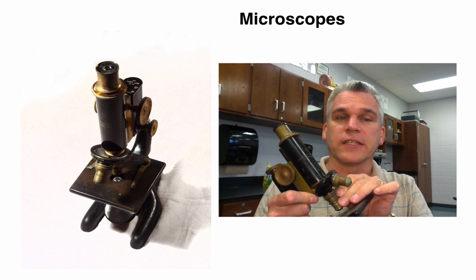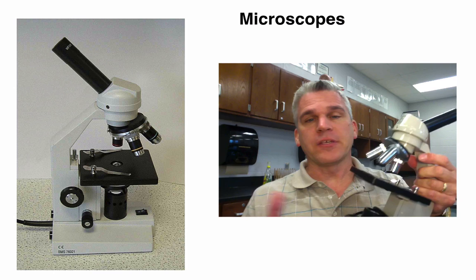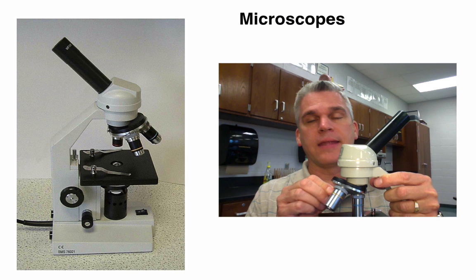However, we have better microscopes today. Today we use an electric microscope, which is similar to the last one except that it has three different objectives or lenses: low power, medium power, and high power. The longer the objective, the greater the power. It plugs in and has a light source so that we can easily view what we want to look at.